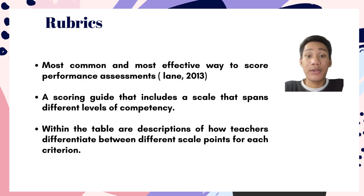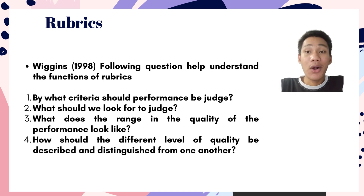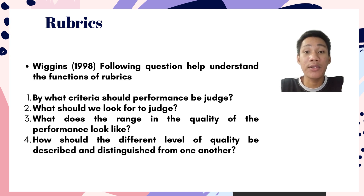The next type of criteria is rubrics. According to Lane (2013), rubrics are the most common and most effective way to score performance assessment. A rubric is a scoring guide that includes a scale spanning different levels of competency, and within the table are descriptions of how teachers differentiate between different scale points for each criterion. According to Wiggins (1998), answering four guide questions helps understand the function of rubrics and create a better rubric.